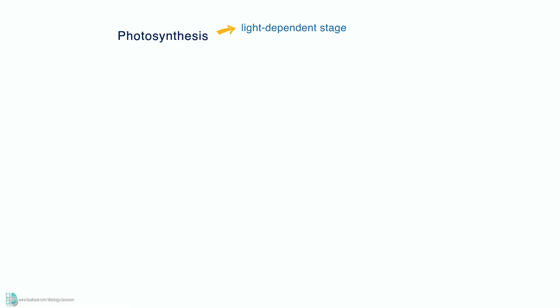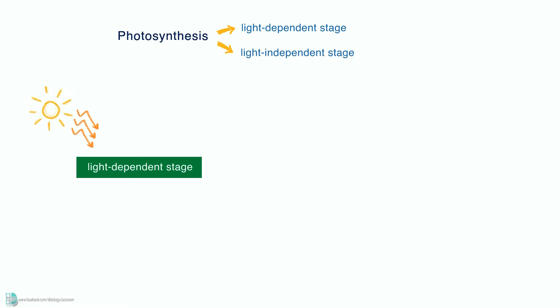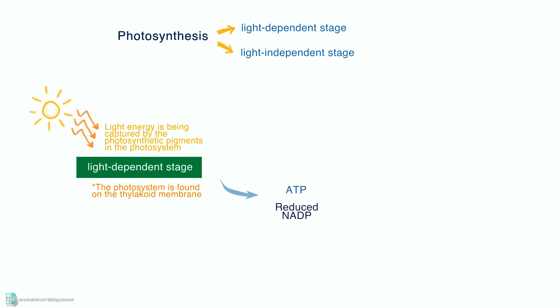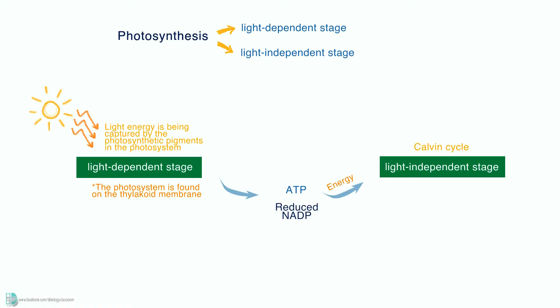Photosynthesis consists of two main stages: the light-dependent stage and the light-independent stage. In the light-dependent stage, light energy is captured by the photosynthetic pigments in the photosystem. The photosystem is found on the thylakoid membrane. The energy is used to produce ATP and reduce NADP. These products will then be used in the light-independent stage, which consists of a process known as the Calvin cycle. ATP supplies energy to the process,